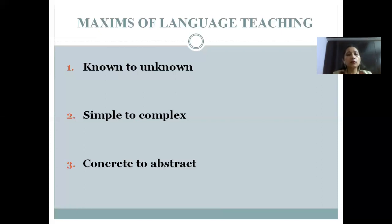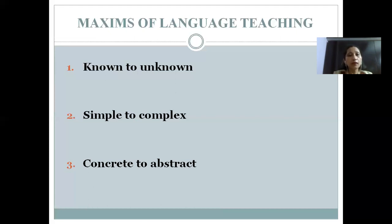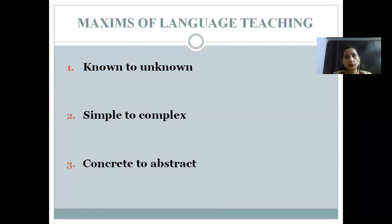Now let us understand another maxim of language teaching: concrete to abstract. Concrete is something which is tangible, which the child can experience and see through their sense organs; abstract is something intangible which the child cannot see. We all know that children learn easier and faster through their observation, sense organs, and experiences. So this maxim talks about organizing your language teaching in such a way that you move from concrete to abstract — from tangible ideas and concepts to something intangible and abstract in nature. For example, if you are teaching the topic of nouns.